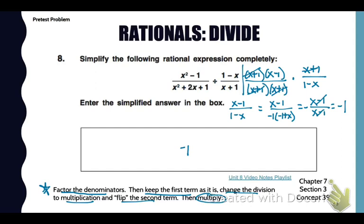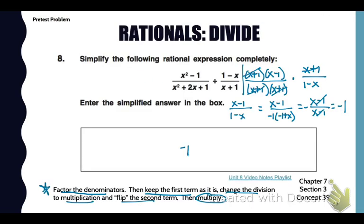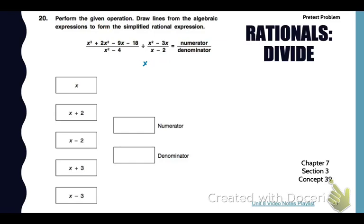Look at number 20 in your pretest. We're going to divide. It says perform the given operation, draw lines from the algebraic expressions to form the simplified rational expression, the numerator and the denominator. I'll start with my numerator on the left and factor it. It's four terms, so I'm going to factor by grouping.